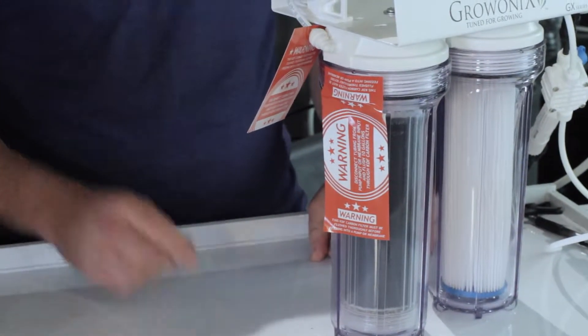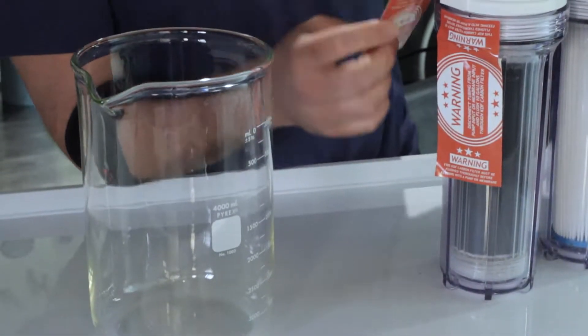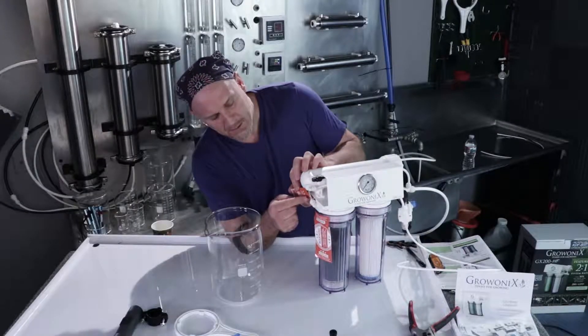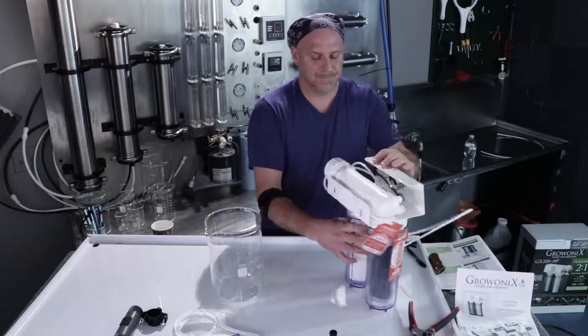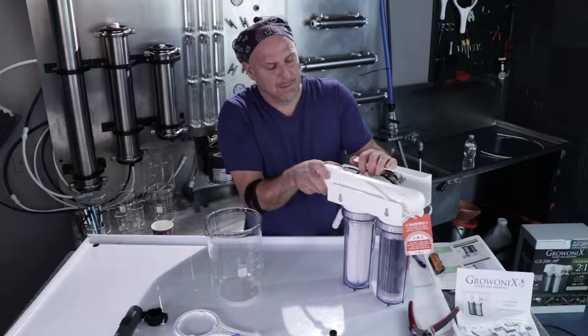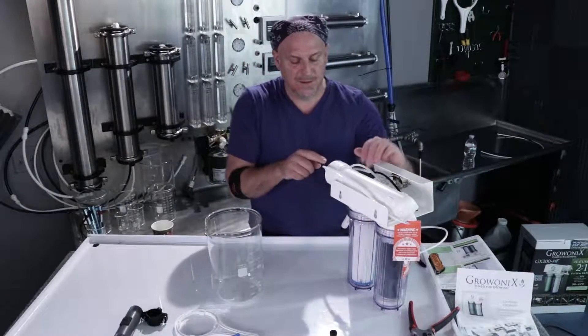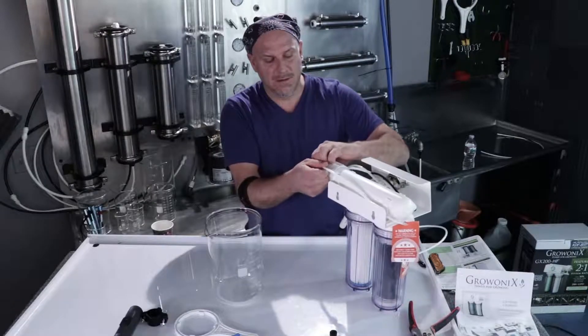I need to take this line right here that feeds the input of the membrane. I'm going to spin it around to show you and pull this line up. Here's the output from the carbon filter and it feeds the input of the membrane. I'm going to undo this line.